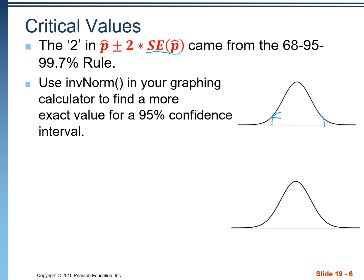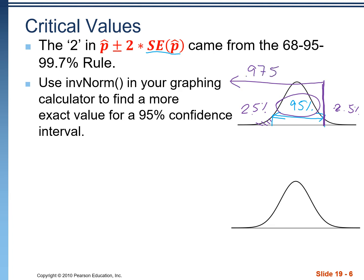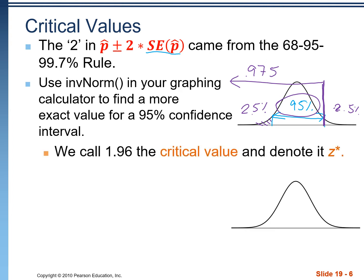We're talking about 95% being in the middle of our distribution. Anytime we use inverse normal, we're looking for area to the left. We want a Z score for that boundary value. 95% is in the middle, with 5% outside — 2.5% on the left tail and 2.5% on the right. That means everything to the left of the right boundary is 97.5%, or 0.975. We put that into inverse normal and get 1.96. That's the actual value we use — it's called a critical value, denoted Z star.